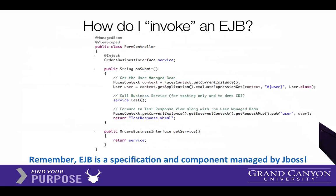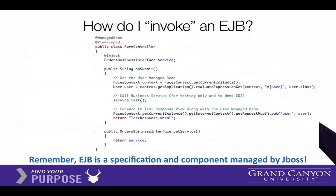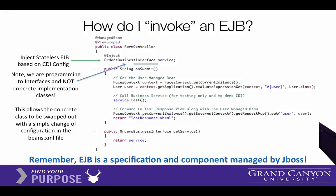Once we have an EJB created, we'll have code using the keyword inject. Inject is a lot like the word include — it allows you to access a component that is not within this class. Notice we are talking about the interface, not the concrete implementation, because we can have more than one version of our business service and simply tell the XML file which one we want. Now let's get coding and make some of this work in our application.